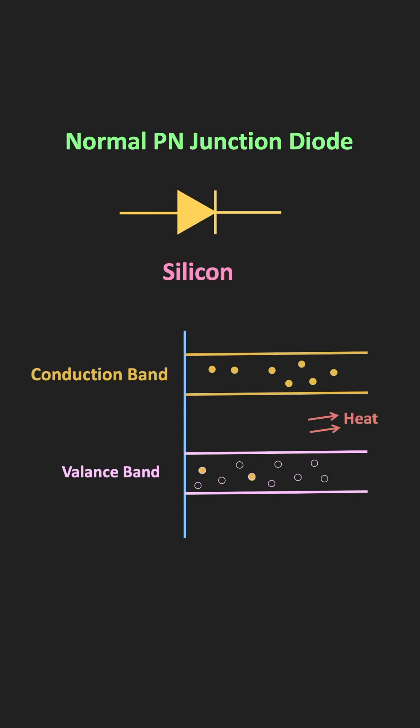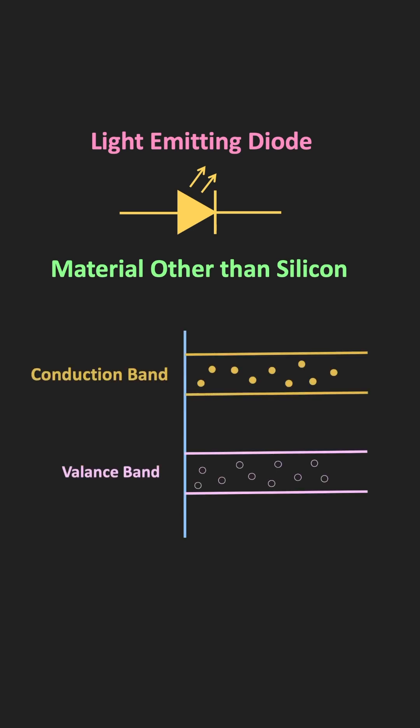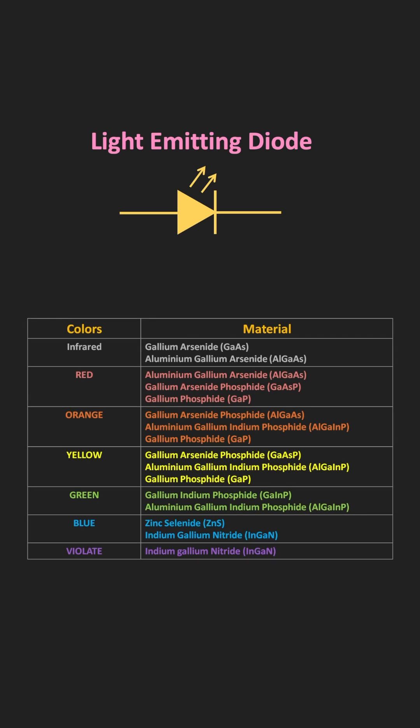But that is not the case with LEDs, because the semiconductor materials used for making LEDs are other than silicon. With these materials, when the electrons in the conduction band combine with the holes in the valence band, they release the energy in the form of light. The wavelength of the light depends on the materials used for making these LEDs, so to get different colors, different materials are used.